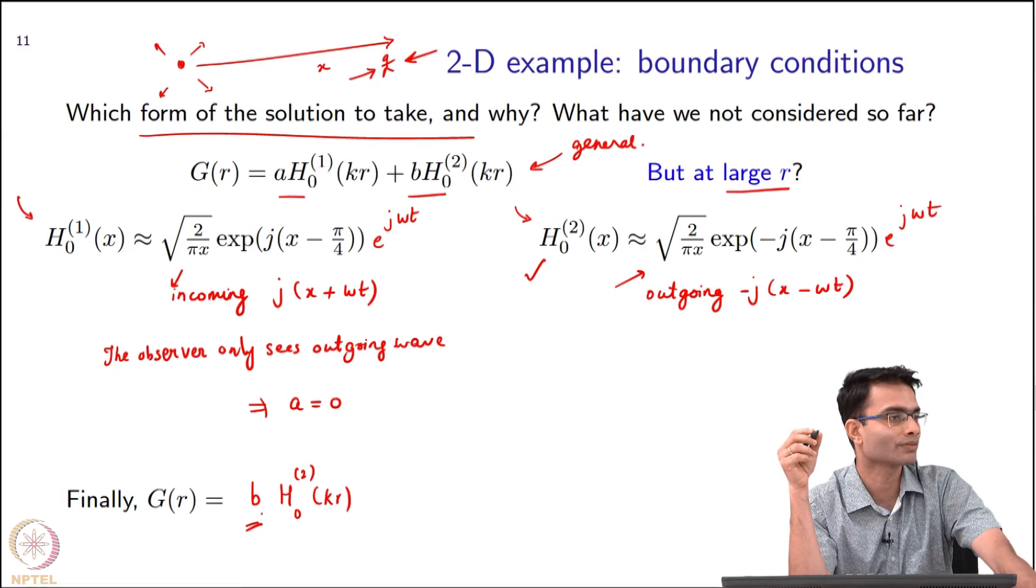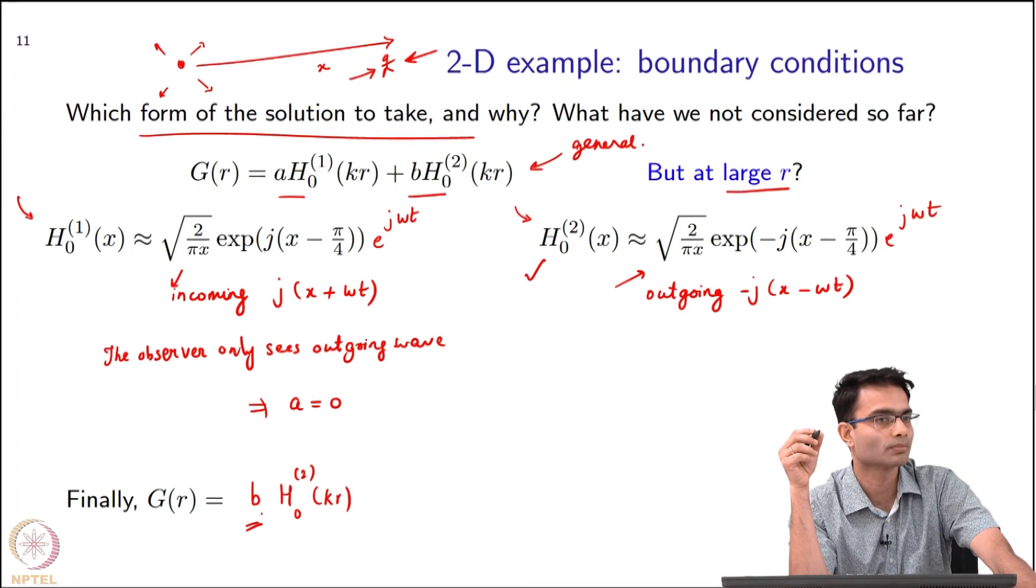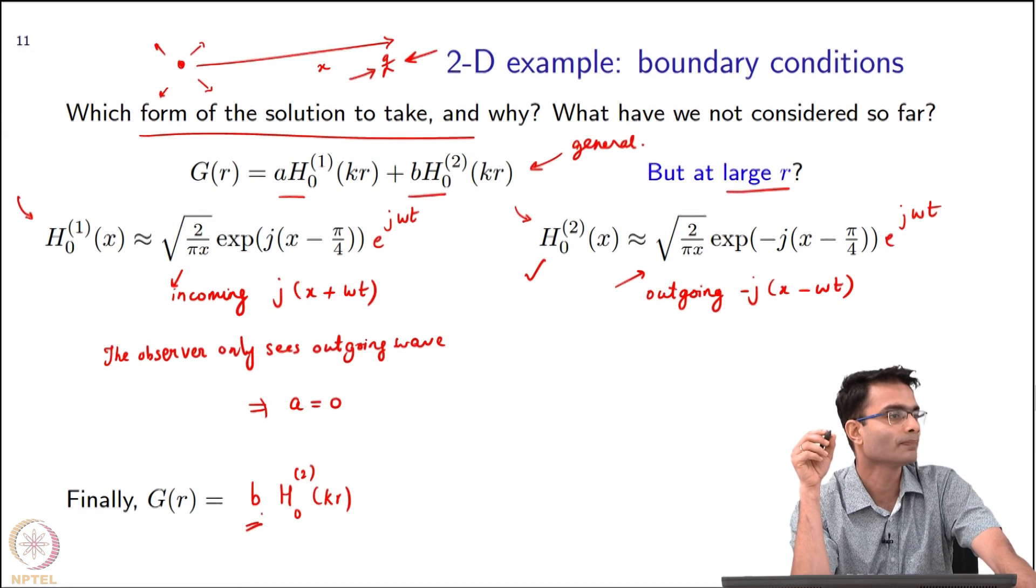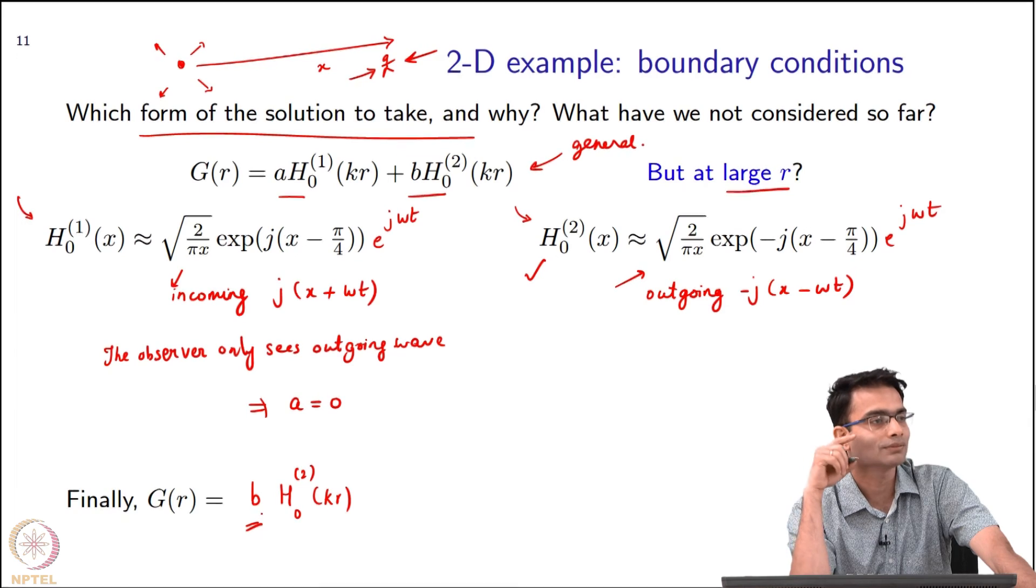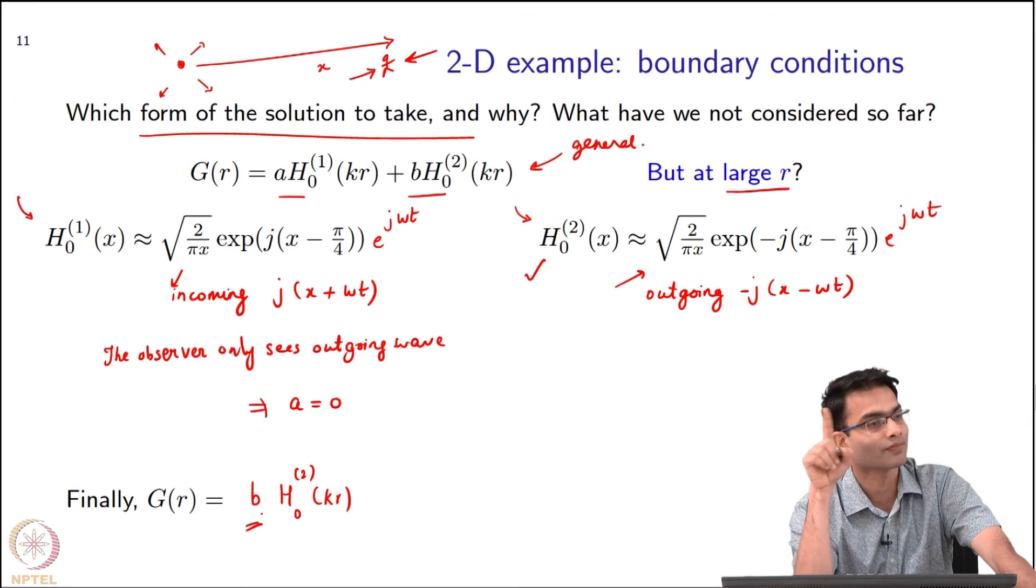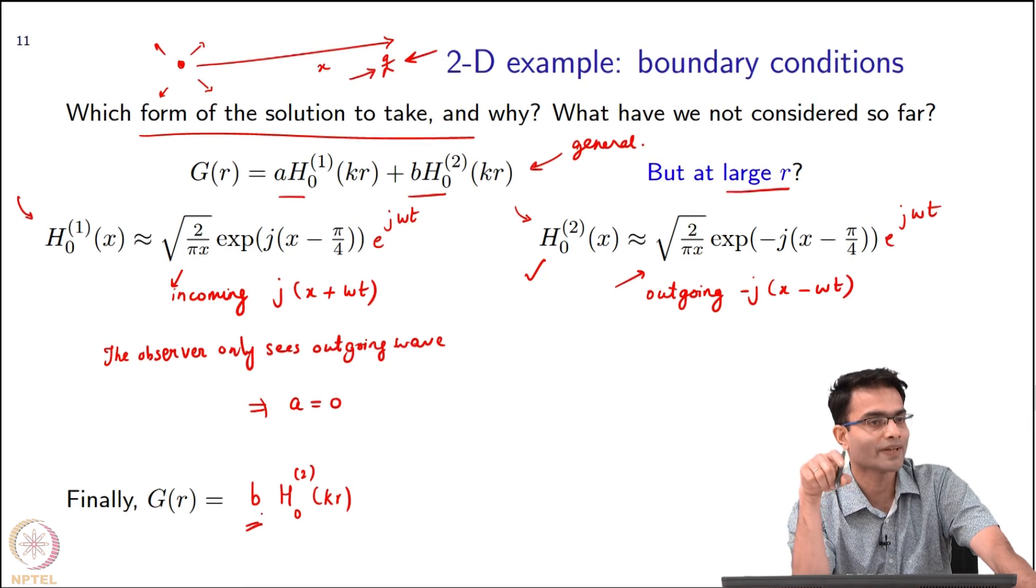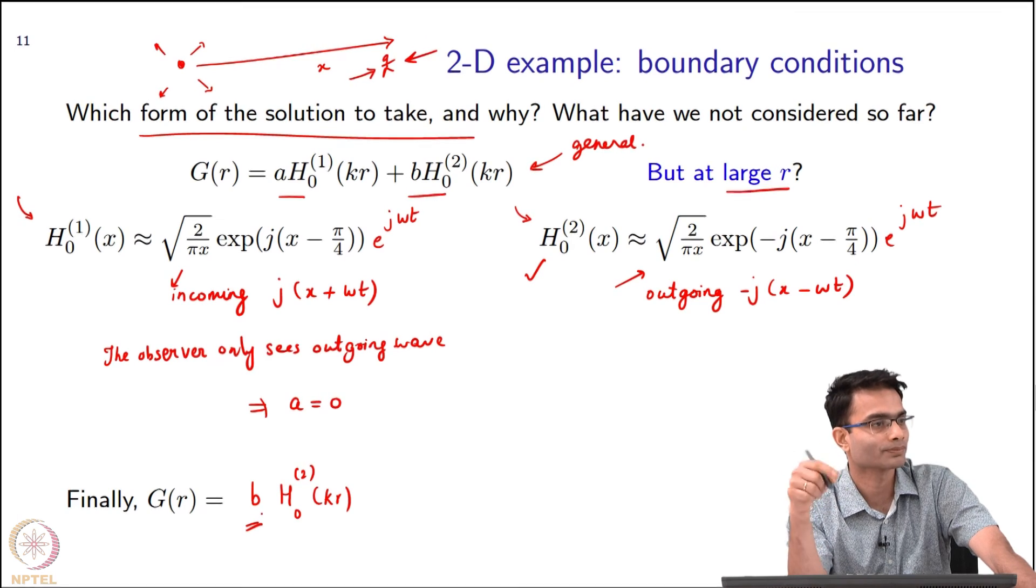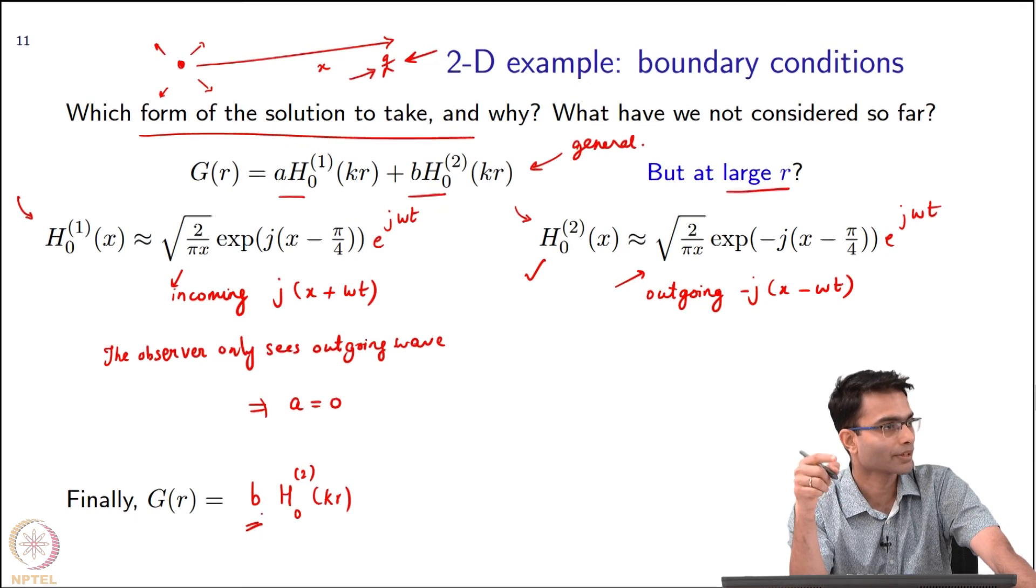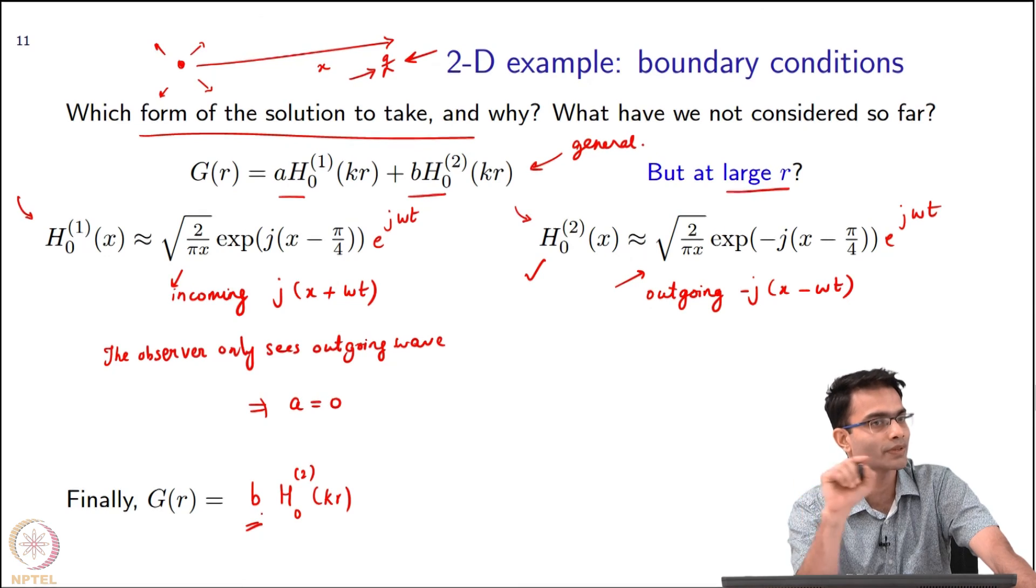When dealing with singularities or infinities, what is the one safe way of dealing with them? Limit. Limit is one thing. We already saw in the 1D Green's function when we had a delta function, did we approach it directly or did we do something else to it? We integrate it, right.